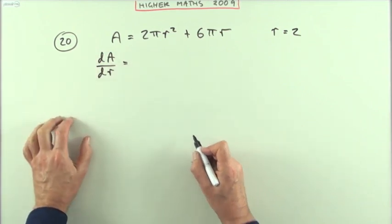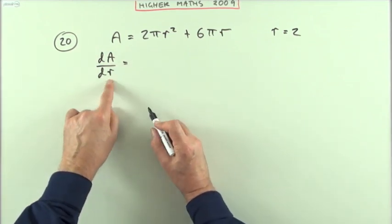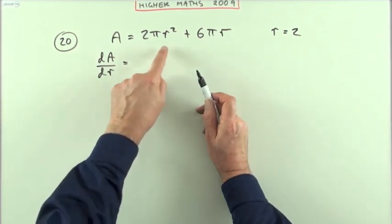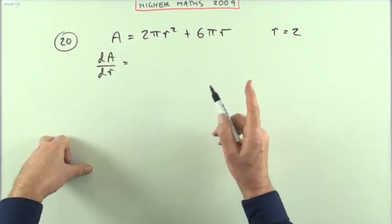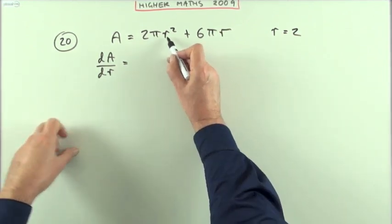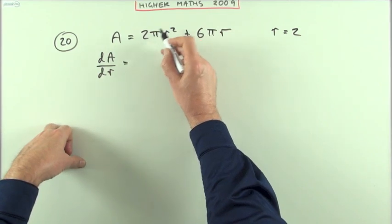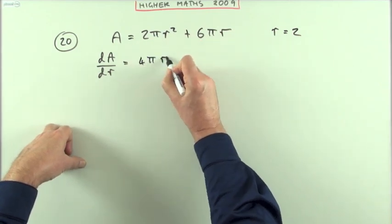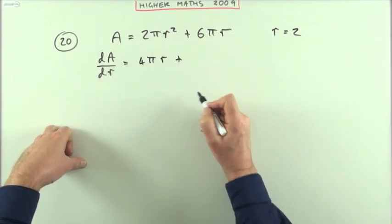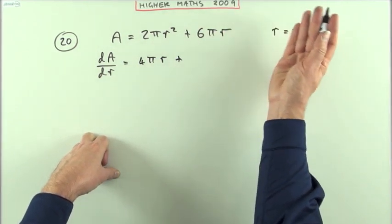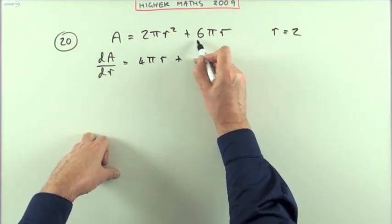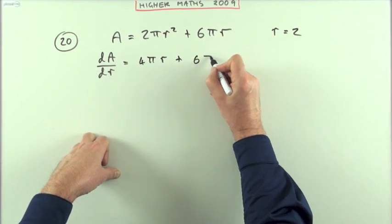dA by dr, the rate of change of A with respect to r, meaning r's your variable. No matter what you see there, r's your variable, anything else isn't. It just acts like a number. So as far as r's concerned, its power is 2 multiply, I'll have 4π. Take one off, it'll just be 1. r's your variable, so if it's a linear term, it'll just be whatever's in front of it, because that'll be its coefficient. So that's just 6π.